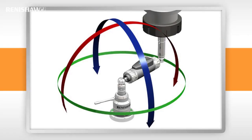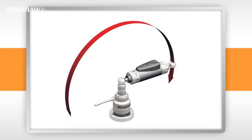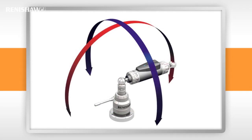The volumetric test is actually made up of three separate parts: typically a 360 degree test in the XY plane, followed by two 220 degree partial arc tests in the YZ and ZX planes.